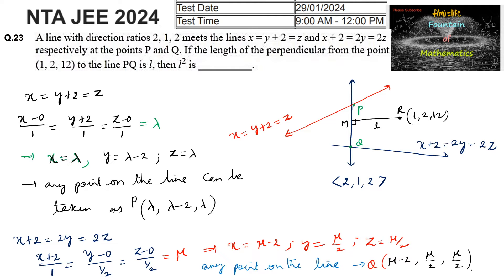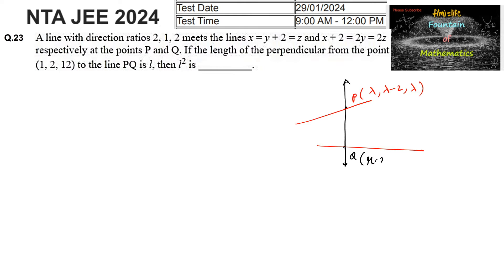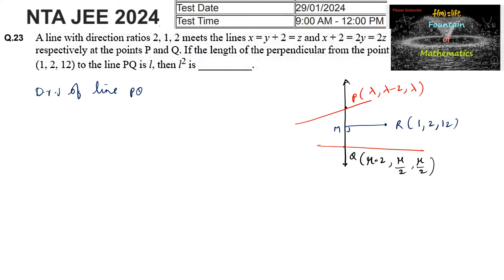So we have points P = (λ, λ-2, λ) and Q = (μ-2, μ/2, μ/2). The line passing through P and Q has direction ratios given by the differences of coordinates. The direction ratios of line APQ are given as 2, 1, 2.